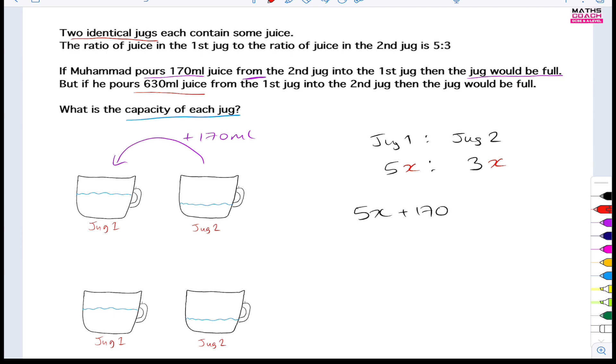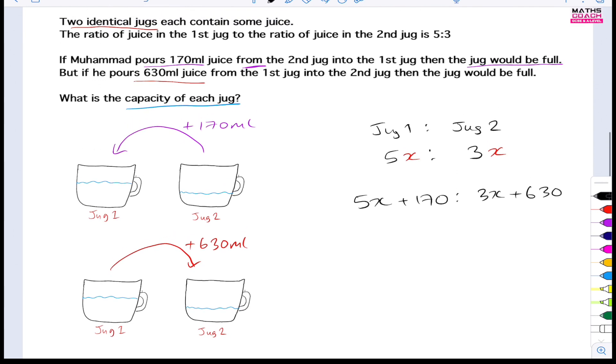Now if we read the second line of that paragraph: if he pours 630 milliliters of juice from the first jug into the second jug, then that jug would be full. So from here we can pour 630 milliliters of juice. What happens? The second jug is now inheriting that 630 milliliters of juice and making that full. So this empty space that you have here in either of those jugs - in this case this will fill that up and make it full. But what does it mean for this? You probably guessed it would be 3x plus 630.